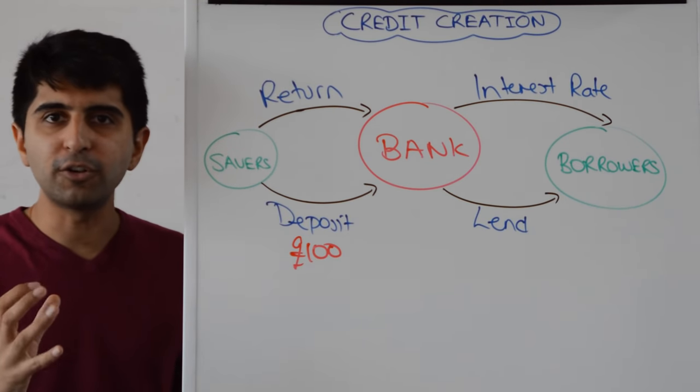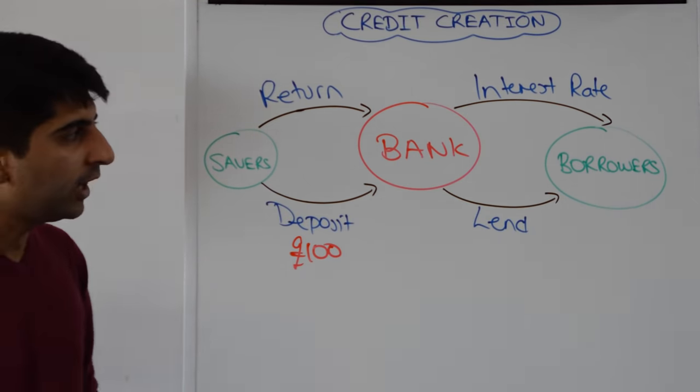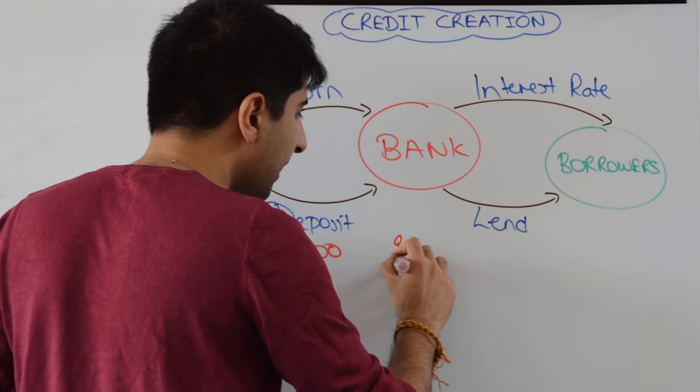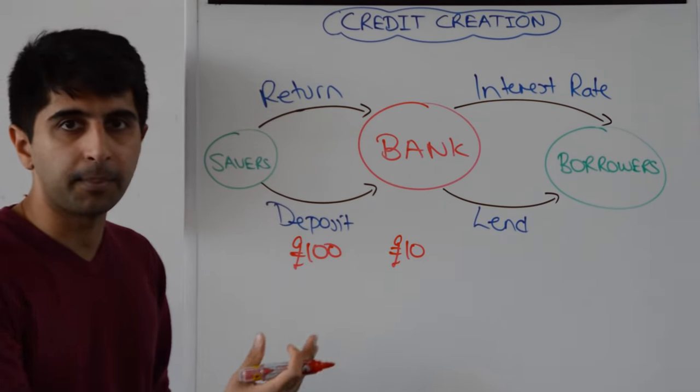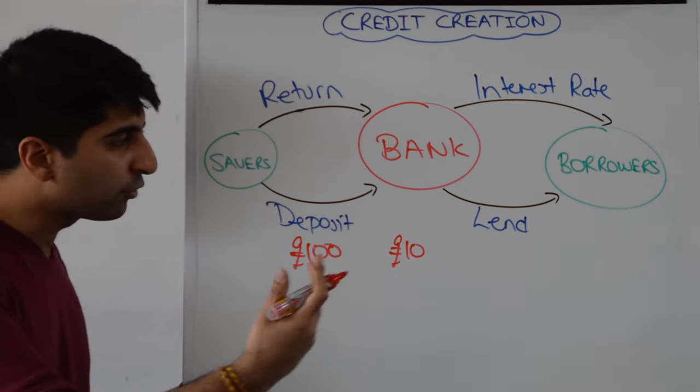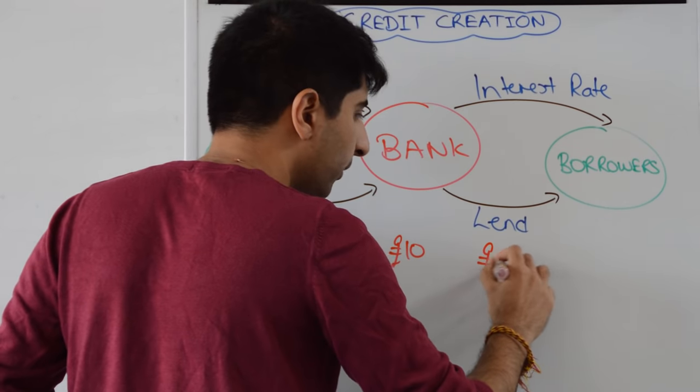But unlikely that a hundred pounds will be withdrawn at once. So the bank decides that maybe only ten pounds of that needs to be left in the bank in case that saver comes and demands some of it. The rest of it can be lent out to borrowers, ninety pounds.